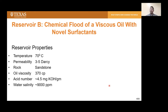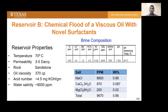Moving to Reservoir B: chemical flood of a viscous oil with novel surfactants. Reservoir temperature is 70°C, permeability 3–5 Darcy, sandstone, oil viscosity 370 cP, highly acidic oil with acid number 4.5, and low water salinity less than 9,000 ppm (about 0.96 wt% salt).